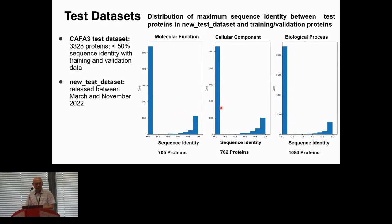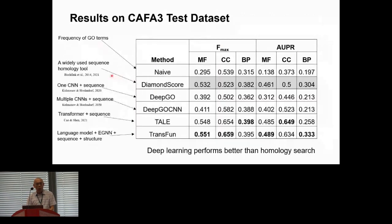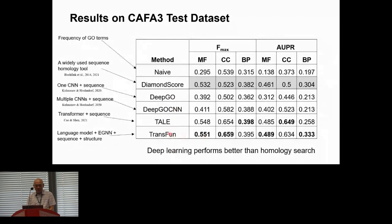We compared our method against several baselines: a naive frequency-based method, DIAMOND score for sequence homology, DeepGOCNN using convolutional neural networks with sequence input, TAIL using a transformer with sequence, and our method TransFun using both the language model, EGNN, and combined sequence and structure. Our method performs best in most situations, second best in biological process by F-measure and in cellular component by area under the precision-recall curve. Interestingly, the top machine learning methods outperform the best homology-based method on this dataset.